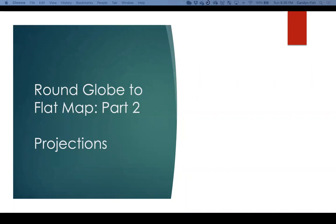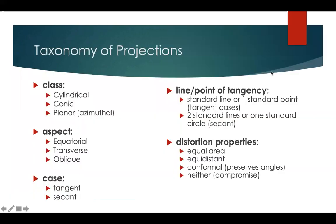All right, let's talk about projections. When we think about projections, there are four things to take into account: class, aspect, case, which when combined with class tells us about lines and points of tangency, and finally, our distortion properties. Let's talk about each of them in a little bit more detail.